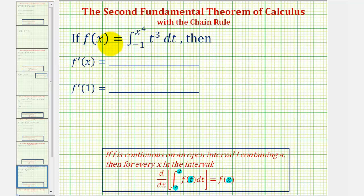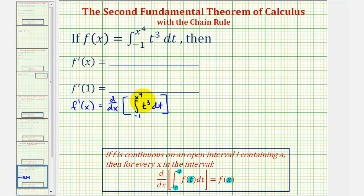So if f of x is equal to this integral, we can say f prime of x would be equal to the derivative with respect to x of the given integral. But if we compare the form of this integral to the integral in our theorem, we do have a slight problem. Notice in the theorem, the upper limit of integration is just x and we have x to the fourth. This means we'll have to perform a u substitution before we apply the second fundamental theorem of calculus.